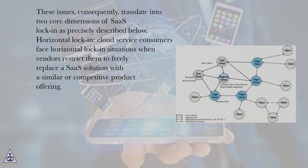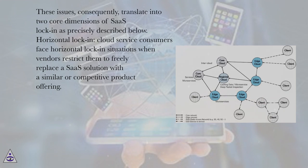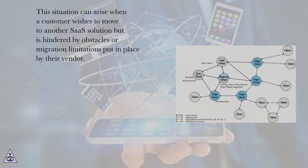These issues consequently translate into two core dimensions of SaaS lock-in as described below. Horizontal lock-in: cloud service consumers face horizontal lock-in situations when vendors restrict them to freely replace a SaaS solution with a similar or competitive product offering. This situation can arise when a customer wishes to move to another SaaS solution but is hindered by obstacles or migration limitations put in place by their vendor.